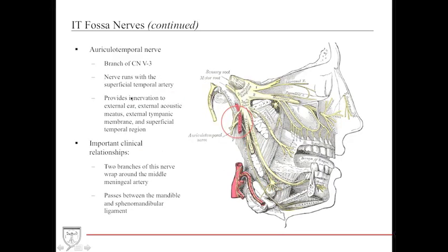The auriculotemporal nerve is a branch of cranial nerve V3. It runs with the superficial temporal artery to provide innervation to the ear and temporal region. Importantly, it forms a loop around the middle meningeal artery — a feature often tested in cadaveric dissections. It provides sensation to the external ear, external acoustic meatus, external tympanic membrane, and superficial temporal region. It also passes between the mandible and the sphenomandibular ligament.